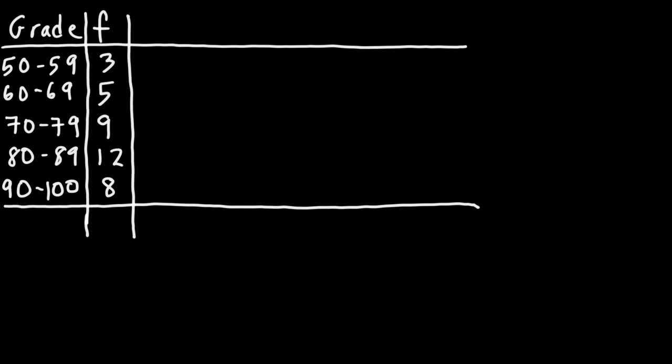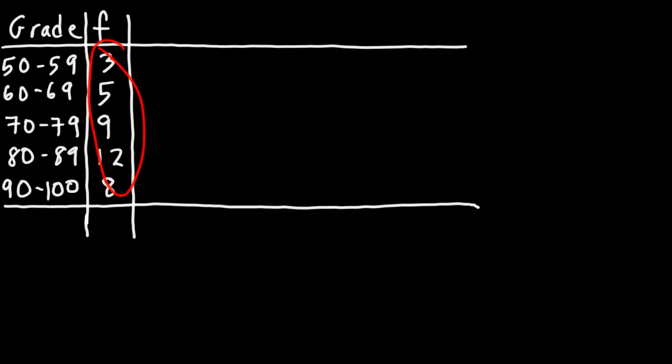In this video, we're going to talk about how to calculate the standard deviation of grouped data. Here we have a class of students, and in a table on the left side, we have different classes of grades: 50 to 59 is an F, 60 to 69 is a D, and so forth. To the right, we have a frequency column — for example, 5 students scored between 60 and 69, and 12 students scored between 80 and 89. How can we calculate the standard deviation given this information?